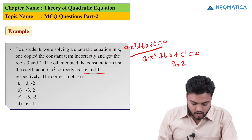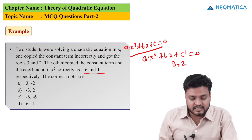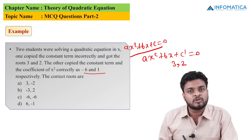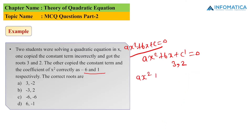The second student copied the constant term and the coefficient of x² correctly but copied the coefficient of x incorrectly, giving equation ax² + b'x + c = 0 with roots -6 and 1. We solved a similar type of question in our previous video. If you understand the concept, pause the video and try to solve it yourself.